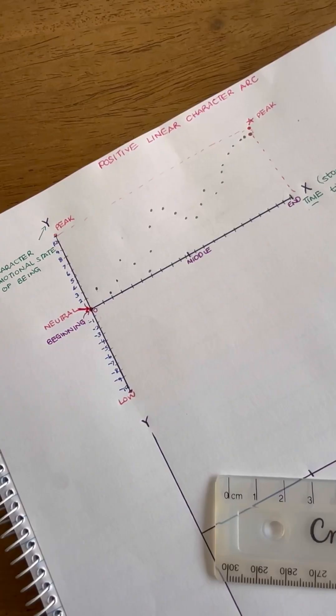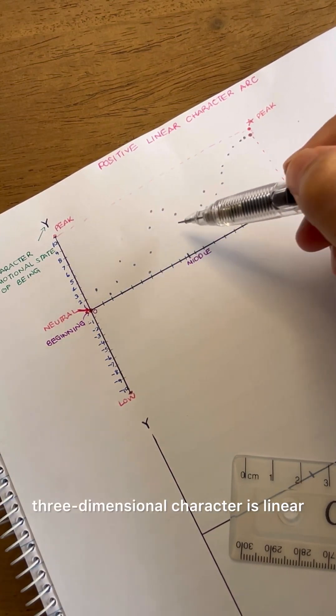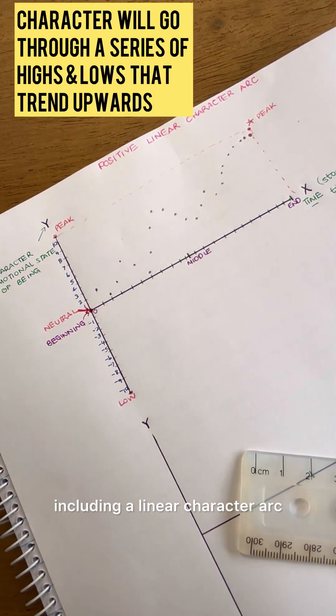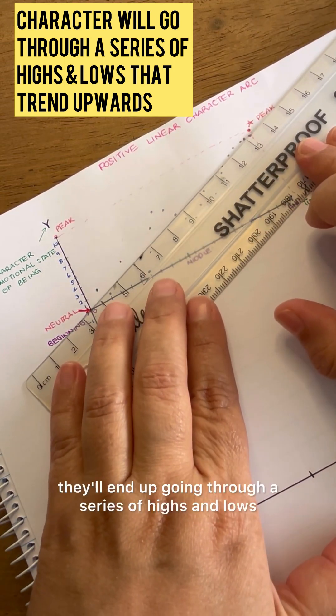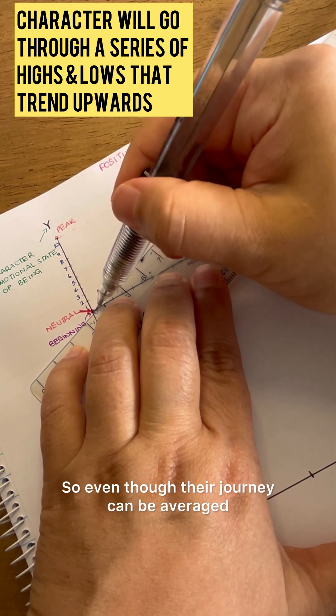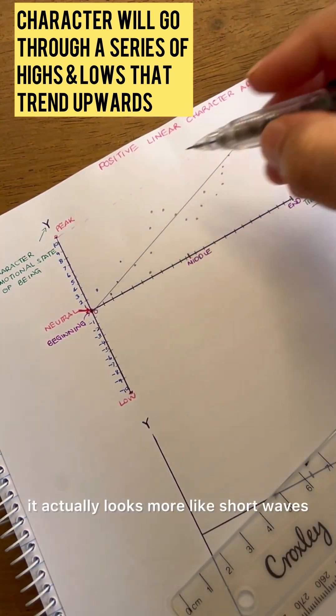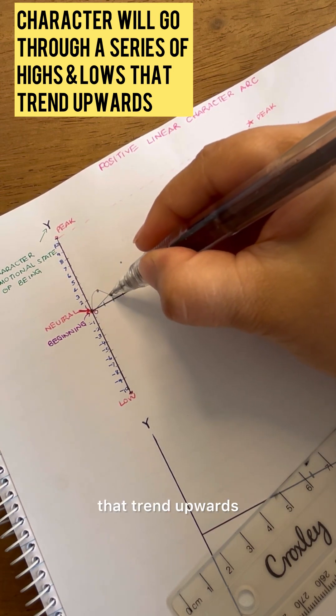And as we can see, nothing about a complex, three-dimensional character is linear, including a linear character arc. Based on what's happening in their life, they'll end up going through a series of highs and lows. So, even though their journey can be averaged out to look like a straight line, in reality, it actually looks more like short waves that trend upwards.